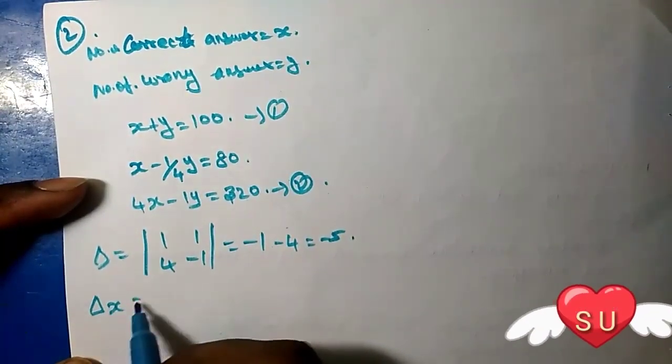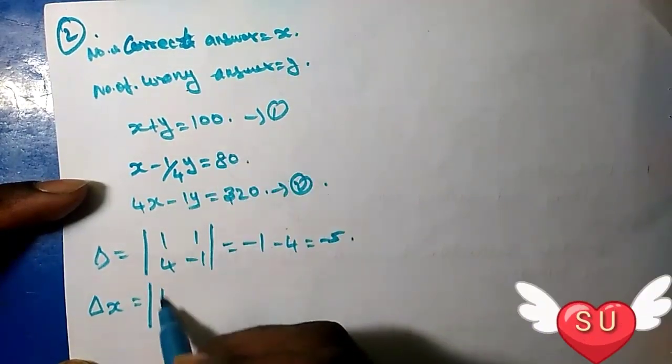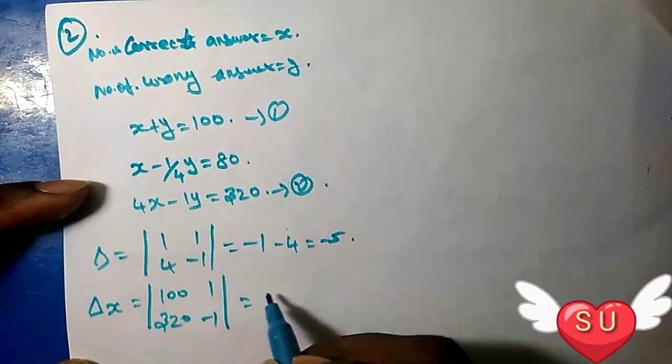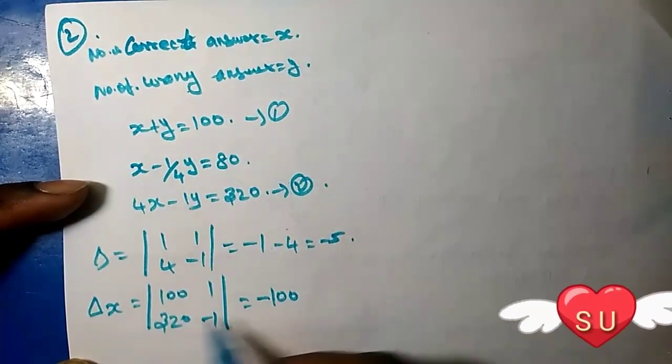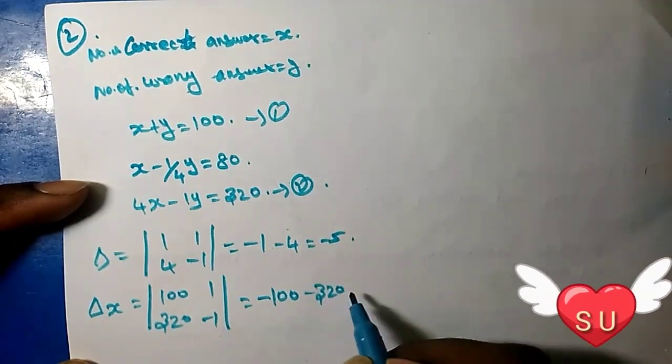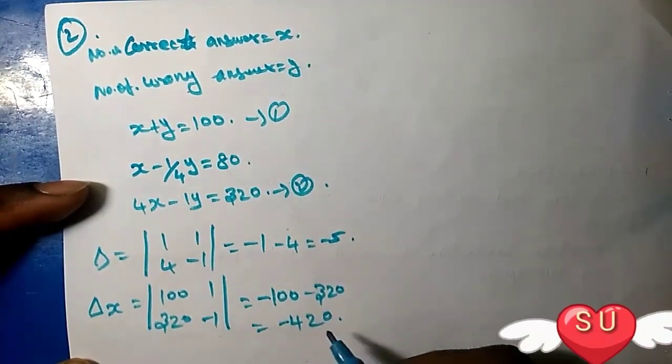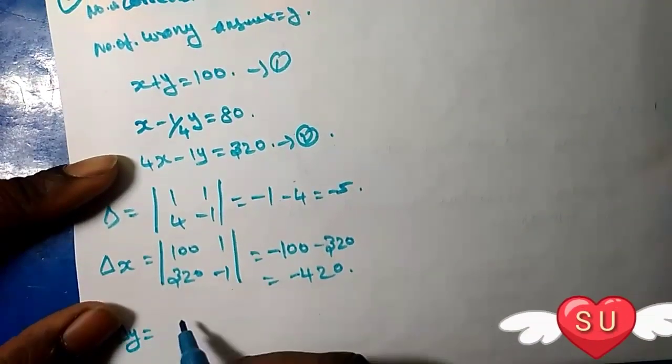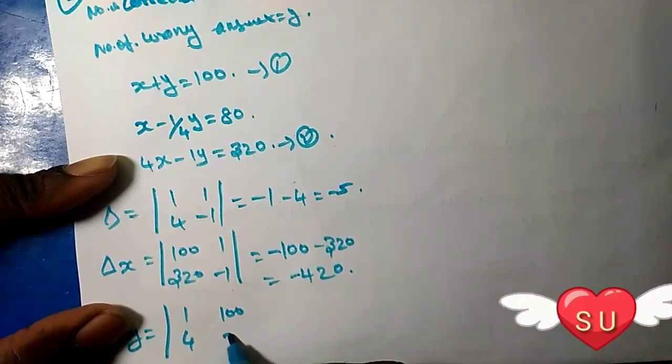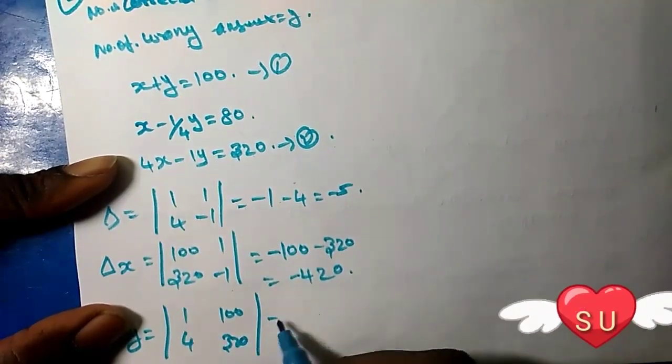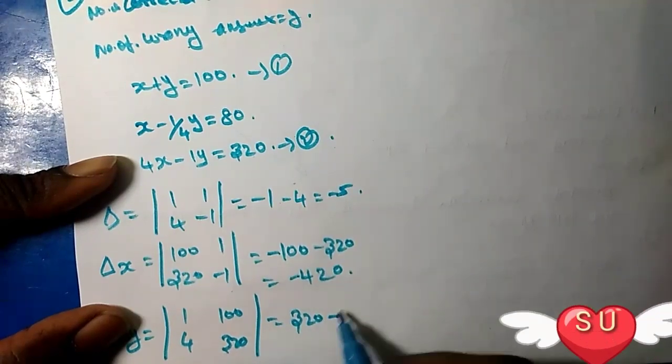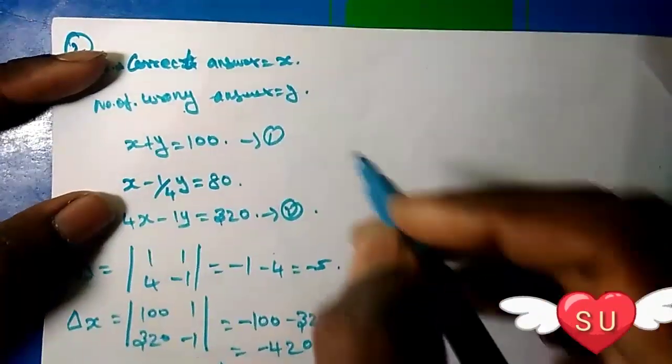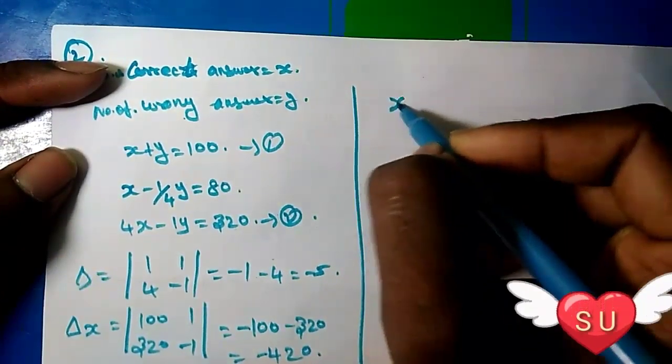Calculating delta: delta equals 1 times minus 1 minus 4 times 1 equals minus 5. Delta x: 100 times minus 1 minus 320 times 1 equals minus 100 minus 320 equals minus 420. Delta y: 1 times 320 minus 4 times 100 equals 320 minus 400 equals minus 80.